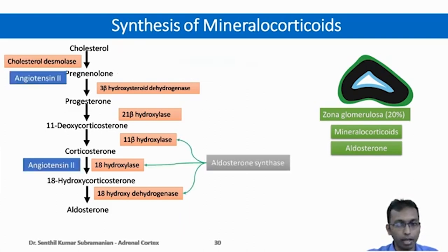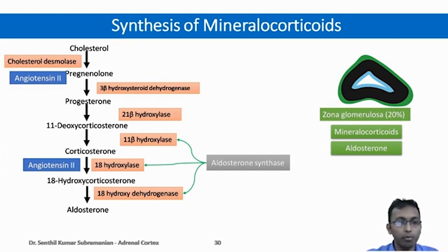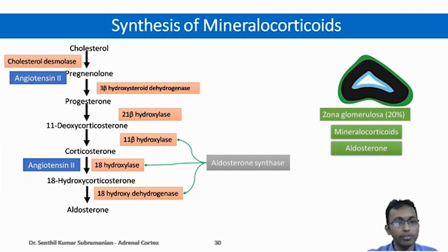18-hydroxycorticosterone is acted upon by 18-hydroxydehydrogenase to form aldosterone. The point to be noted here is that the synthesis of glucocorticoids is mainly under the influence of ACTH released from the pituitary gland. But the synthesis of mineralocorticoids is under the influence of angiotensin-2. The main control of synthesis of mineralocorticoids is angiotensin-2 and potassium levels in the plasma, followed by ACTH levels.